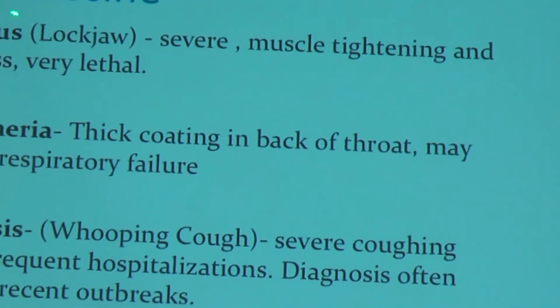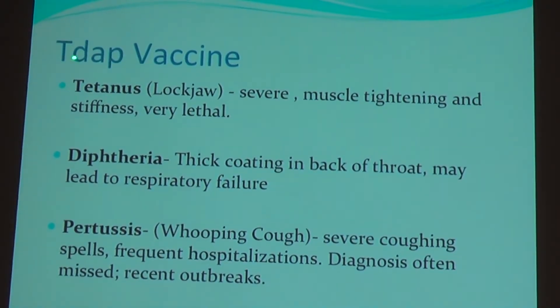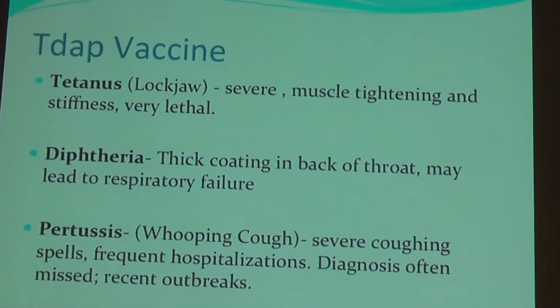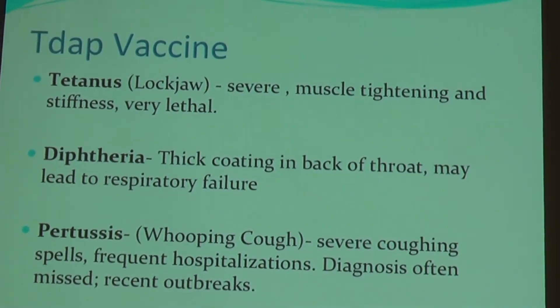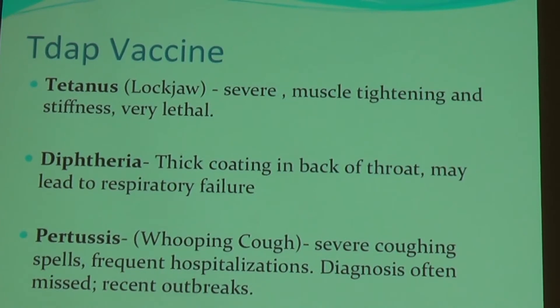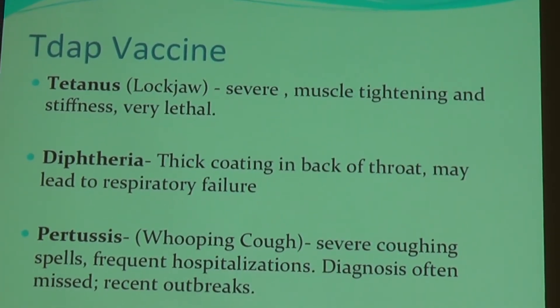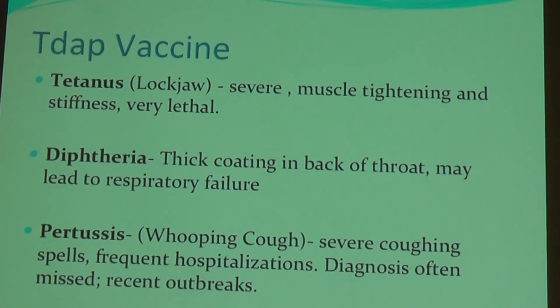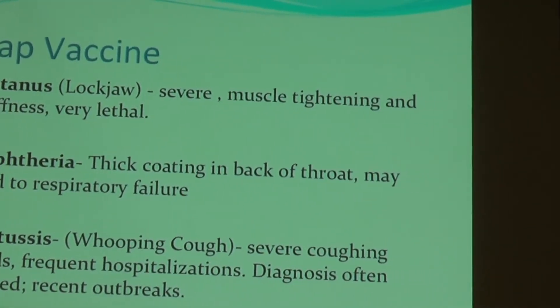The third vaccine I want to talk about is the Tdap vaccine. Tdap is a combination vaccine which protects against tetanus, diphtheria, and pertussis — the 'a' stands for acellular pertussis, describing how the vaccine was produced. Tetanus, also called lockjaw, is a severe muscle tightening and stiffness — very lethal, caused by bacteria found in contaminated or soiled metal that can enter the skin through cuts and bruises. Diphtheria was a frequent childhood disease responsible for a lot of childhood death 60-80 years ago — a thick coating in the back of the throat leading to respiratory failure. We don't see much of it now because of childhood vaccines.